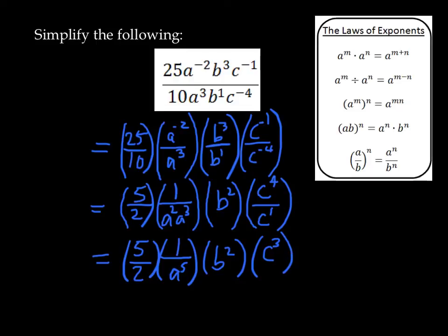We can finally rewrite it into one fraction. That's 5 times b squared times c cubed over 2 times a to the power of 5.